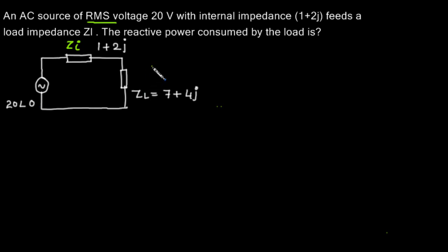In this question we are asked to find out the power consumed by the load. The circuit has an AC voltage source, an internal impedance of 1+2j, and the load impedance of 7+4j.